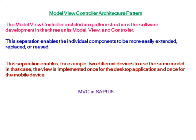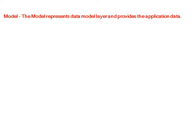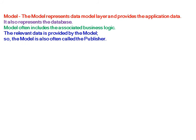MVC in SAP UI5. The MVC is an integral part of SAP UI5 development. When creating an SAP UI5 application project, you have to decide whether you want to create the page according to the MVC pattern. The model represents the data model layer and provides the application data — it also represents the database. The model often includes the associated business logic, and is also often called the publisher.